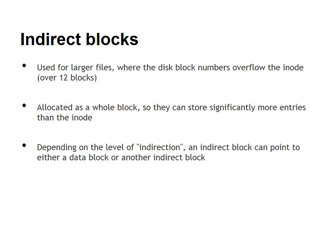Since INODEs are so small, they can only refer to very small files — they can only allocate small numbers of blocks. When you've got more blocks than you have space in an INODE, you can use what's called an indirect block, which is where the INODE will refer to an indirect block, which in turn refers to larger numbers of file blocks.